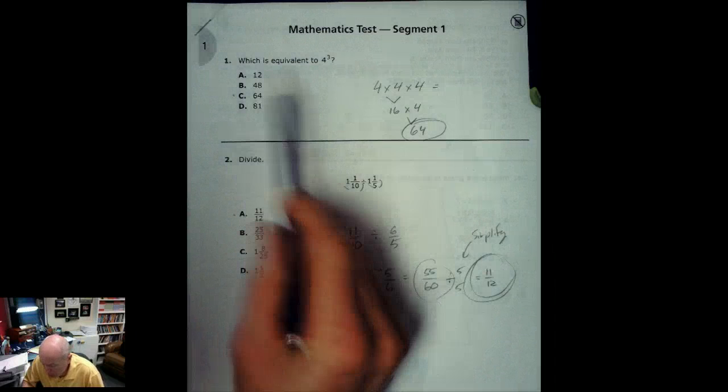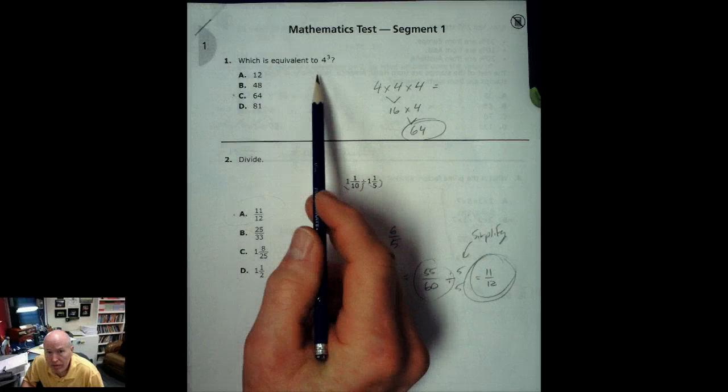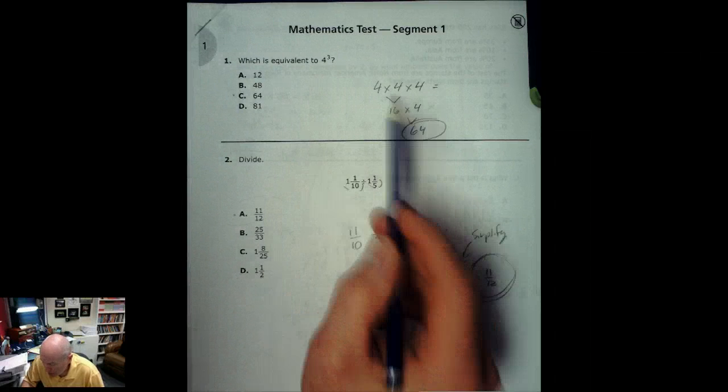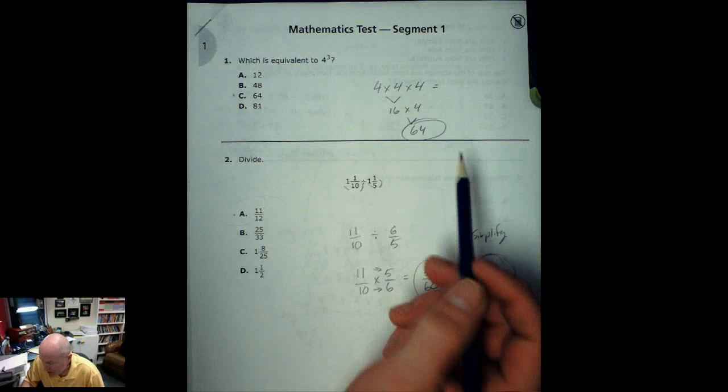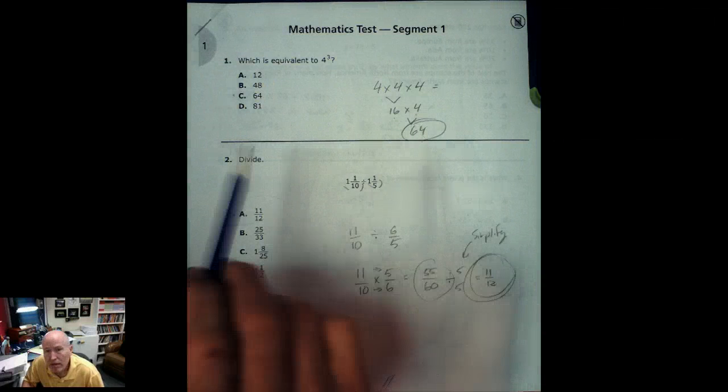Alright, the first problem which is equivalent to 4 to the third. The exponent basically means 4 times 4 times 4, and you see how I broke that down into 16 times 4 and then 64.